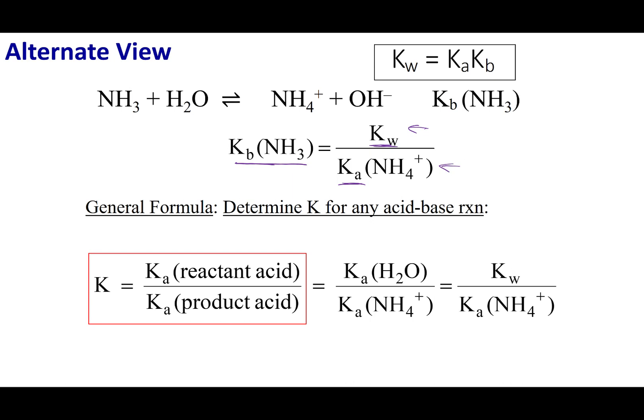Now there's some other insights that this equation provides to us. Let's take a look at this reaction, the Kb reaction of NH3. Kw is actually the Ka of water. If we take a look at this, we can see that water is on our reactant side. So I have Ka of my reactant acid on top. H2O is on the reactant side, it is acting as an acid, giving up the proton to that NH3.